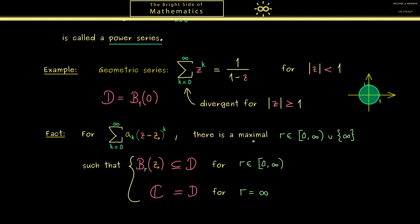Indeed because this r is chosen maximally the result is that everywhere outside we have divergence. Therefore the general picture looks like this.